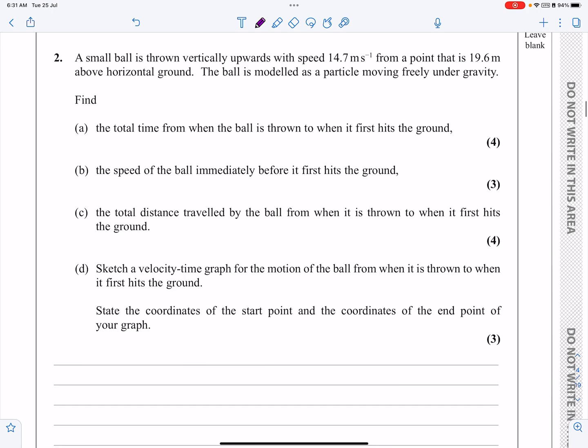Let's have a read through of the question. It says we've got a small ball thrown vertically upwards with speed 14.7 m/s from a point that's 19.6 m above the ground. The ball is modeled as a particle moving freely under gravity, and then lots of different questions.